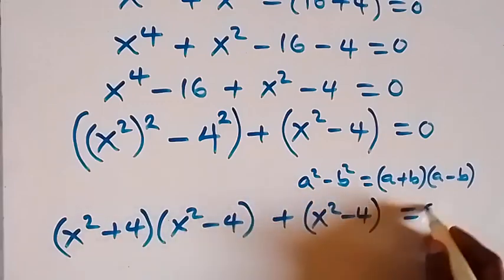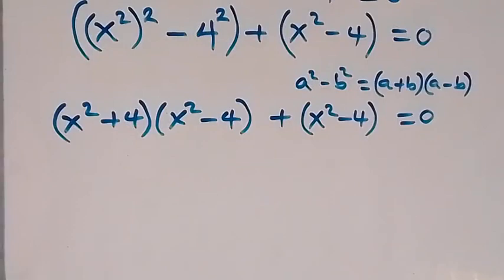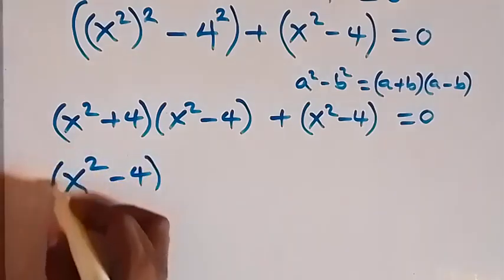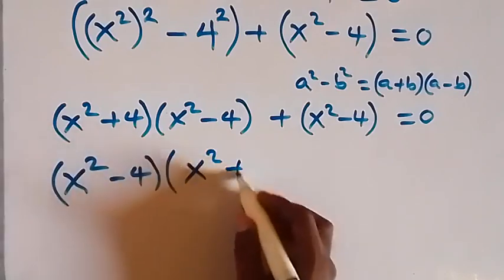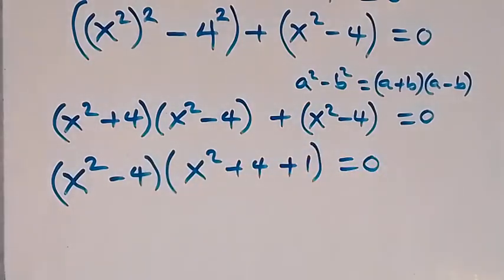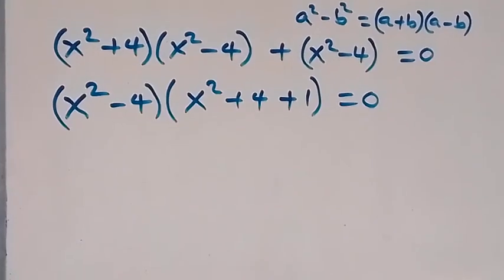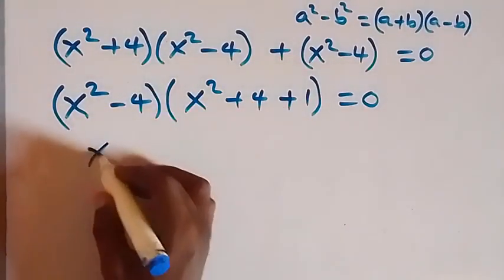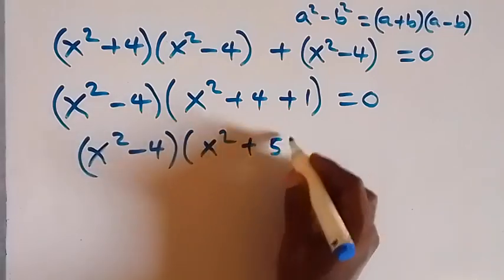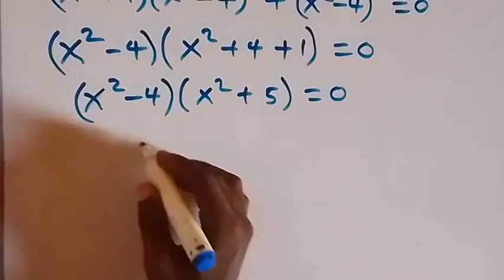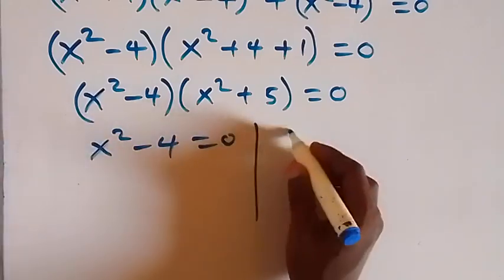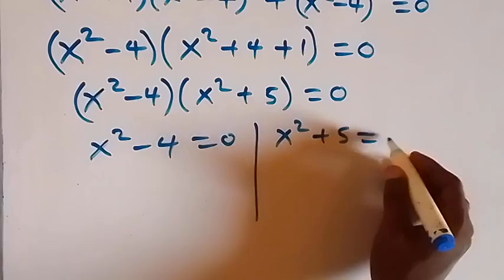From here, we can factor out x square minus 4. We have x square minus 4 appearing in both terms. After taking that out, what is left is x square plus 4 plus 1, giving us x square minus 4 times x square plus 5 equals to 0.